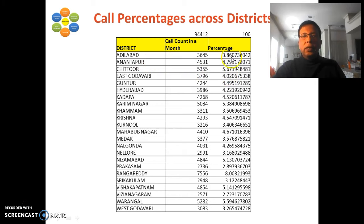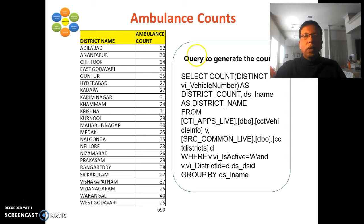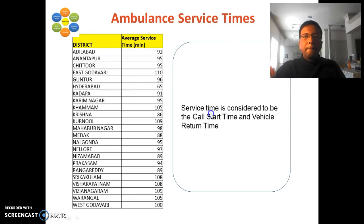For each district, the mean inter-call arrival time is computed. The number of ambulances running in each of the 23 districts in AP was also extracted — totaling 690 ambulances — using a SQL query. Additionally, the service times for ambulances in each district were calculated in minutes, where service time is defined as the duration from call start time to vehicle return time.